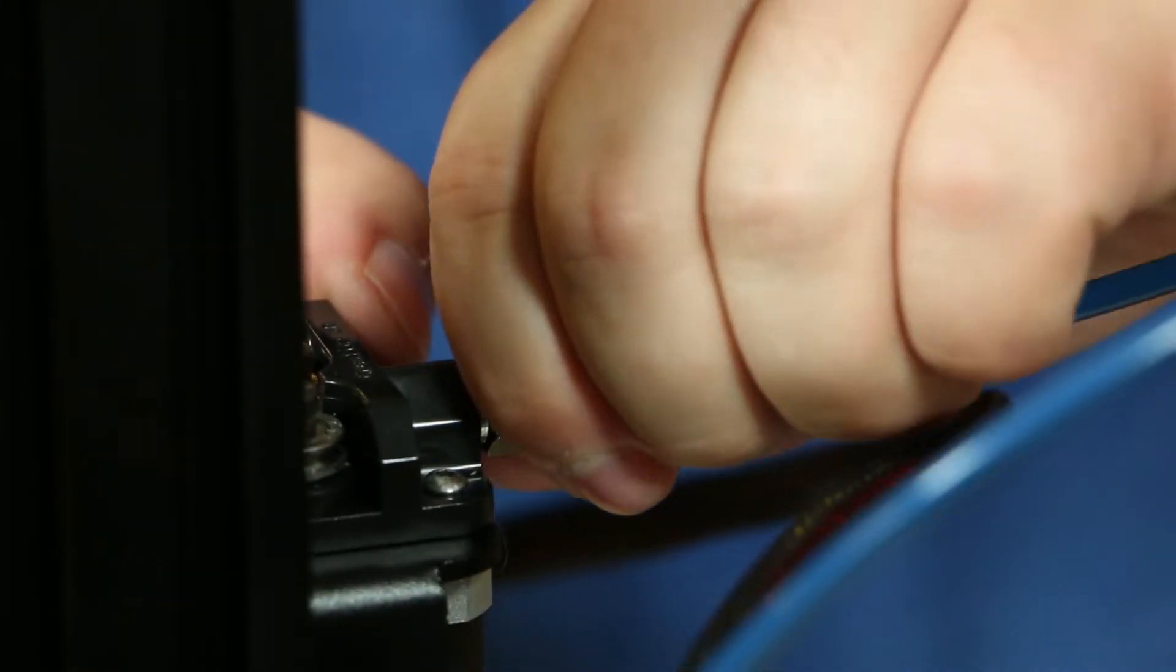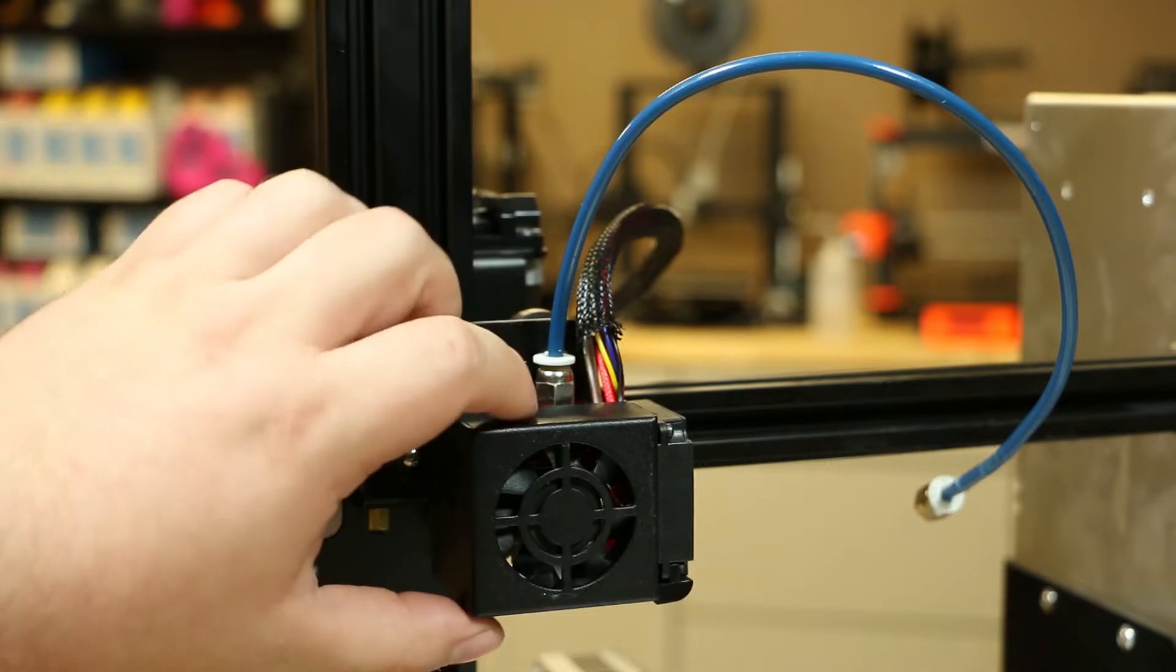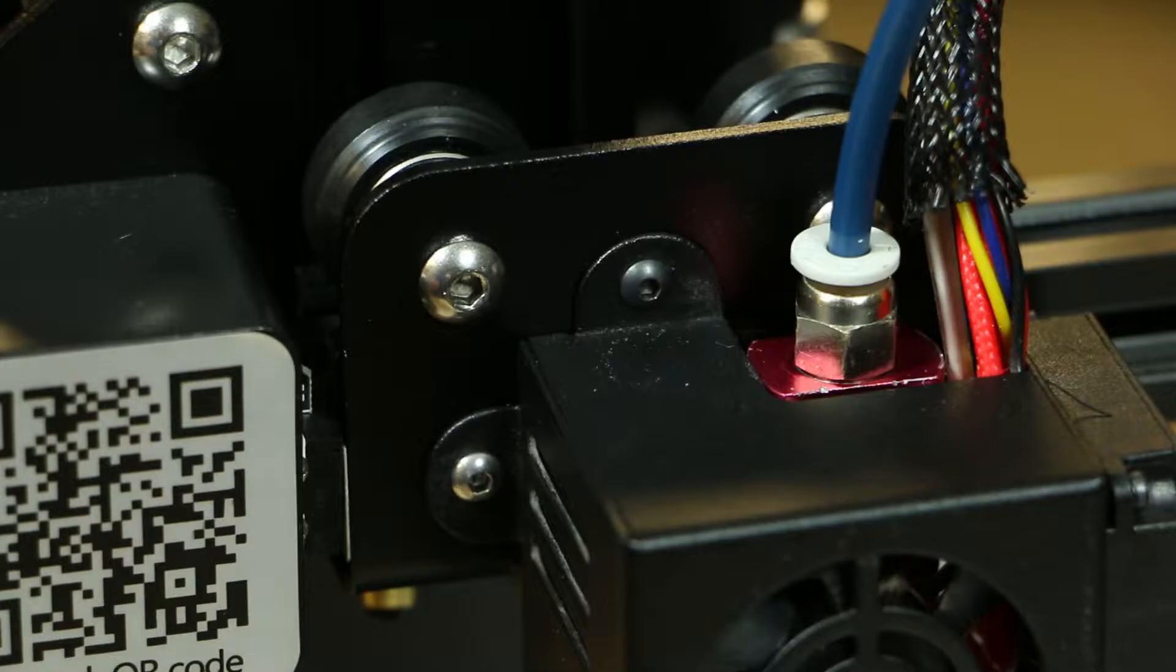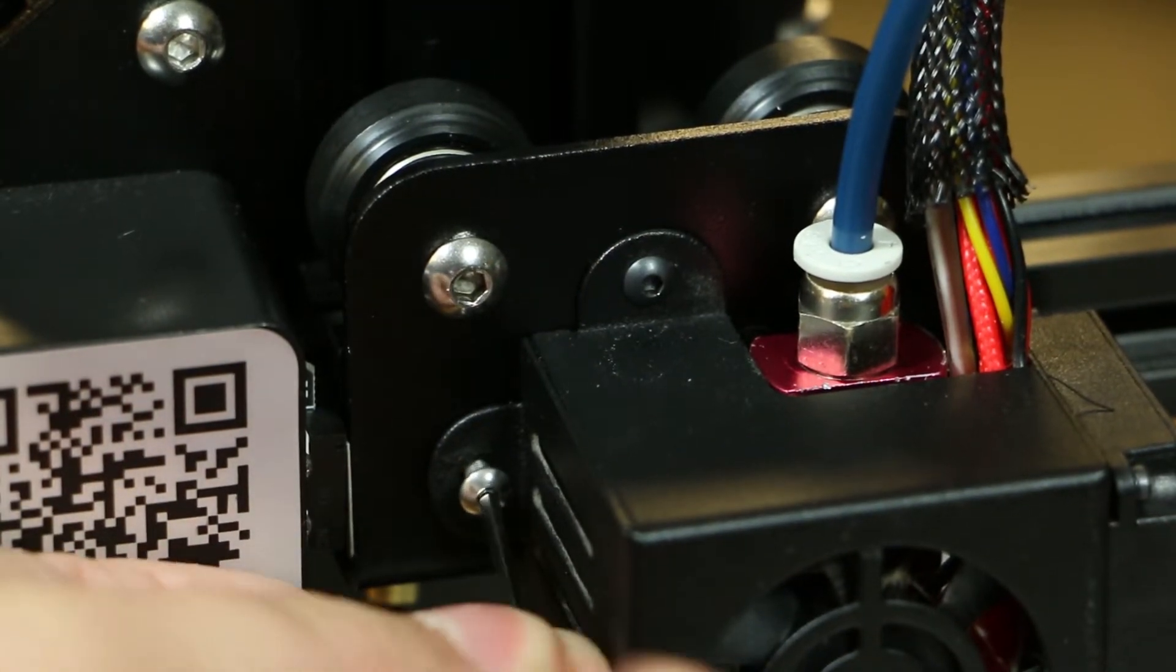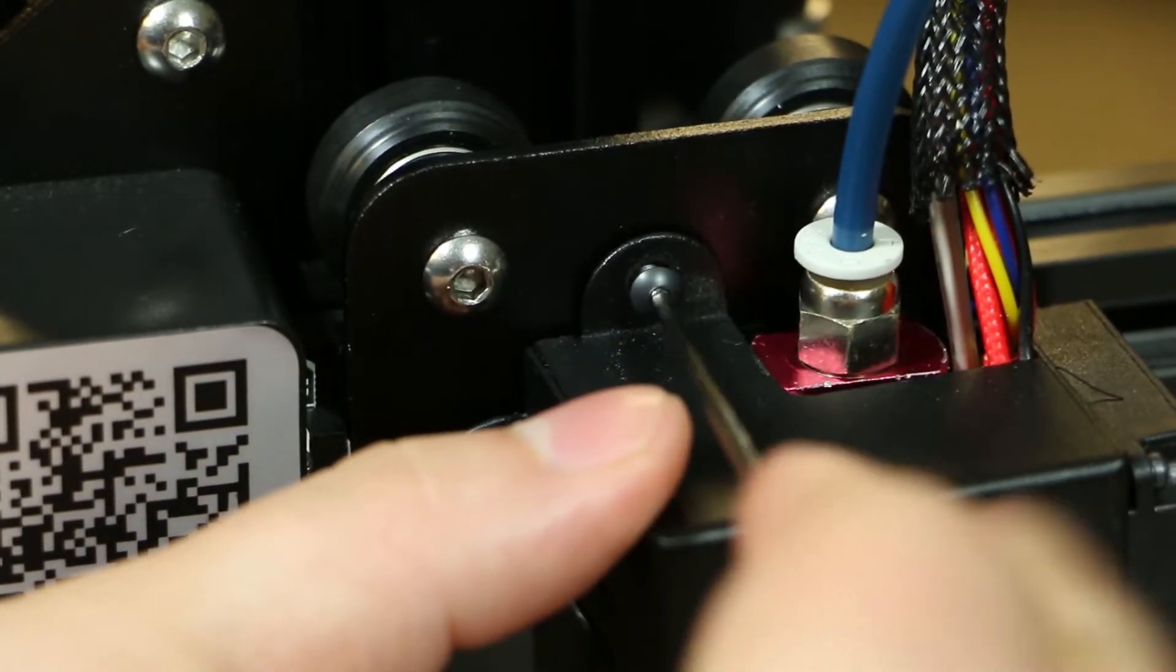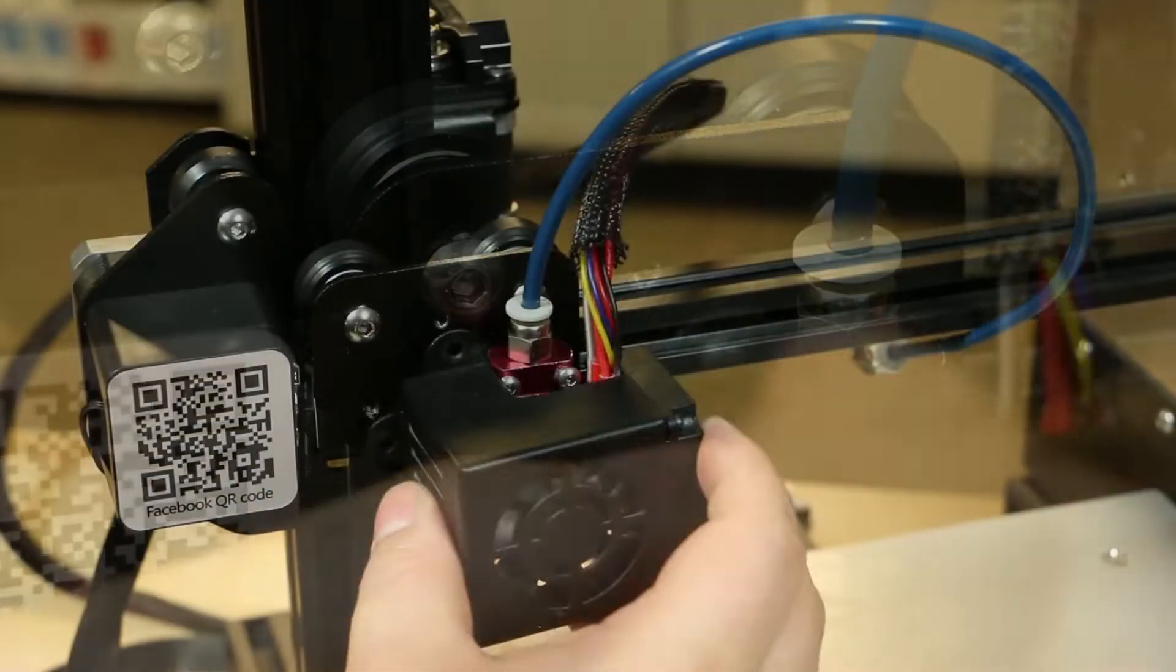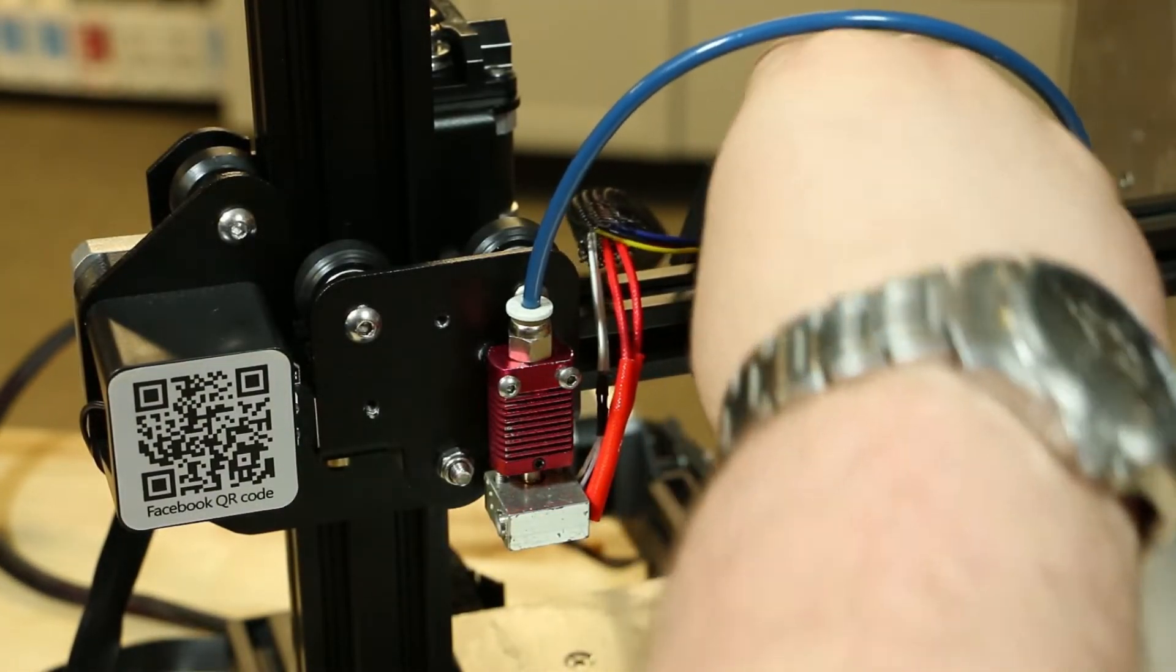Remove the bowden connector from your extruder. Afterward, we are going to remove the fan shroud for the hot end. To remove the shroud, you will have to remove these two screws using the 1.5 millimeter allen wrench. Place the fan shroud onto the x-axis gantry to alleviate the stress on the wires.